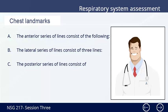The lateral series of lines consist of three lines. Number 1: anterior axillary lines, right and left — they are vertical lines from the anterior axillary fold. Number 2: the mid-axillary line — this is a vertical line from the apex of the axilla. Number 3: the posterior axillary line — this is a vertical line from the posterior axillary fold.